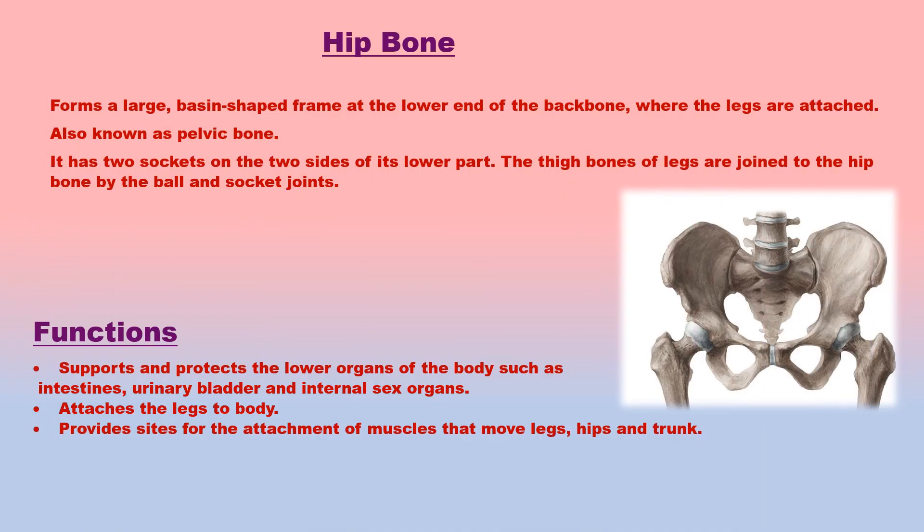The hip bone forms a large, basin-shaped frame at the lower end of the backbone, to which the legs are attached. Also known as pelvic bone or pelvis, it is made up of a number of bones fused together by fixed joints. The hip bone has two sockets on its lower sides, where the thigh bones of the legs are joined by ball and socket joints. It supports and protects lower organs such as intestines, urinary bladder and internal sex organs.